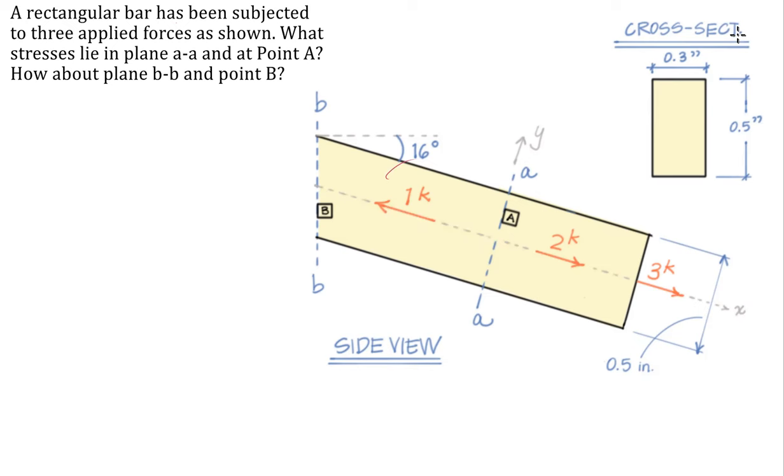Let's start by putting this in equilibrium. I'm going to get my ruler tool out, line it up with this weird geometry. In the positive x direction, I have a three kip force and a two kip force. So that's all sums to five. I've got one kip force in the negative x direction. So five minus one is four. I need four kips of tension at that plane.